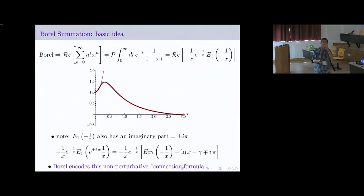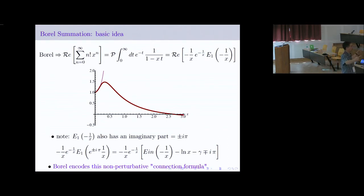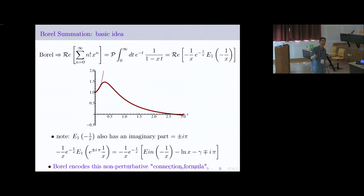What do we do about that pole? Anything you do with it generates a contribution which is imaginary and non-perturbative — the pole is at t equals one over x, so you'll get a term e to the minus one over x. It's imaginary, and you're not quite sure whether you should put a factor of a half in front or whether it's plus i or minus i. Moreover, every single term in that series is real and positive when x is positive, yet I'm telling you the sum has a contribution which is exponentially small and imaginary.